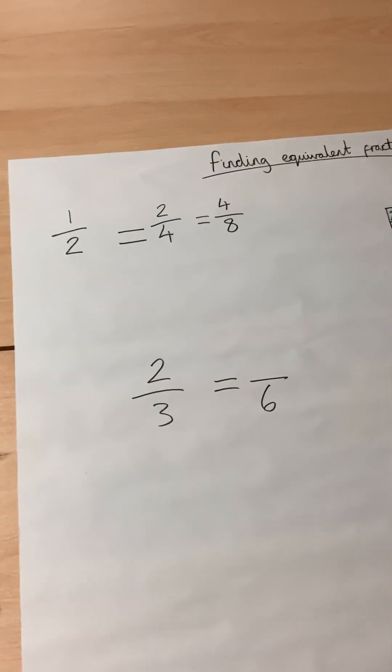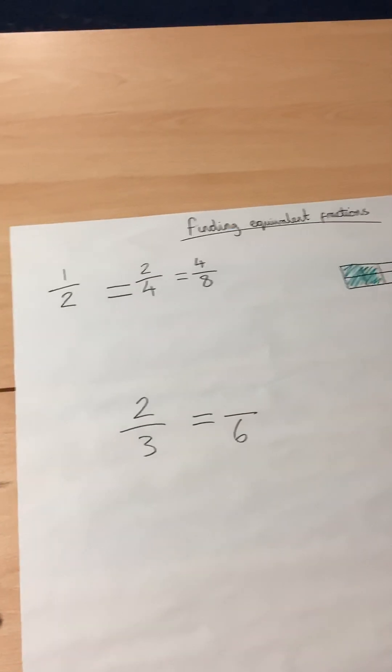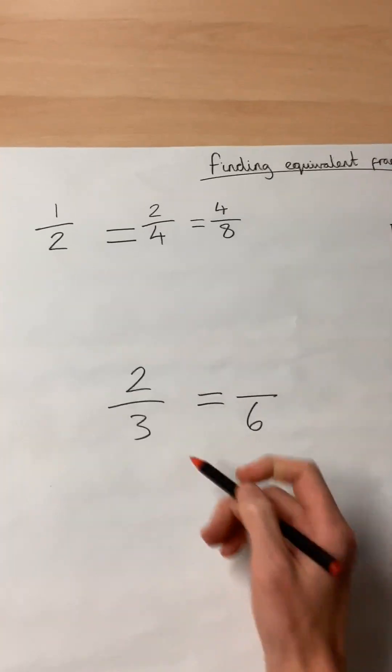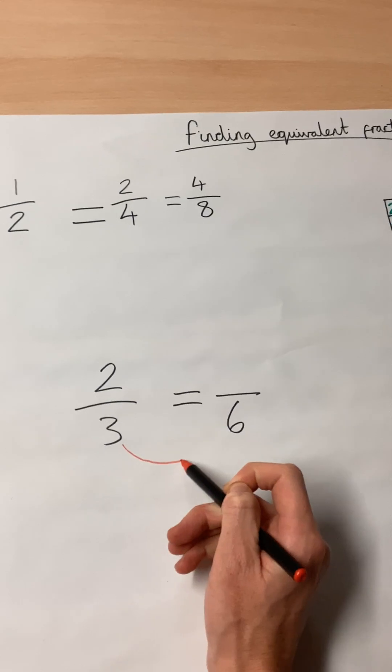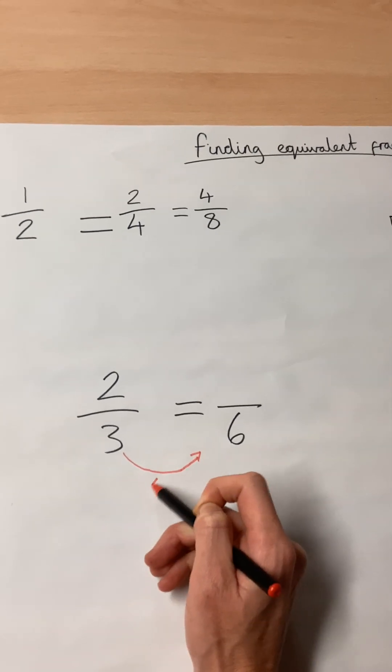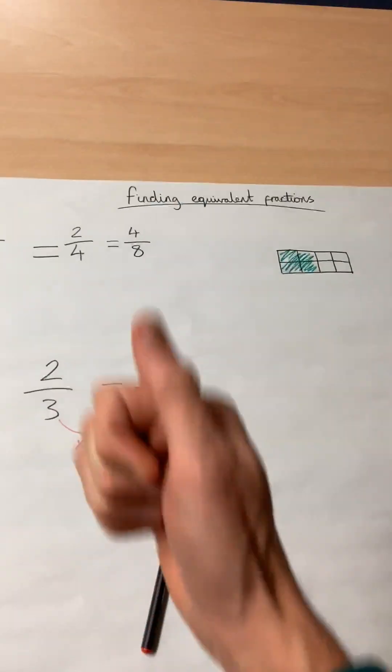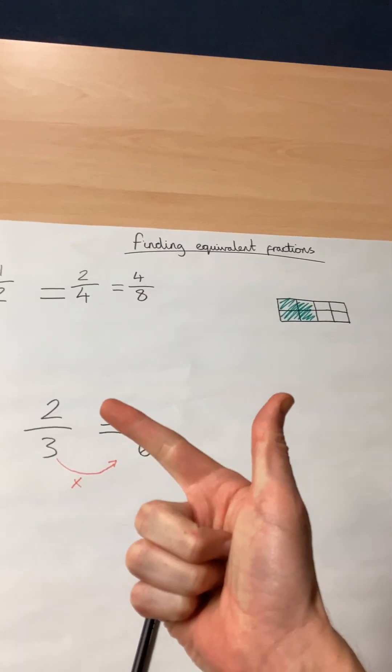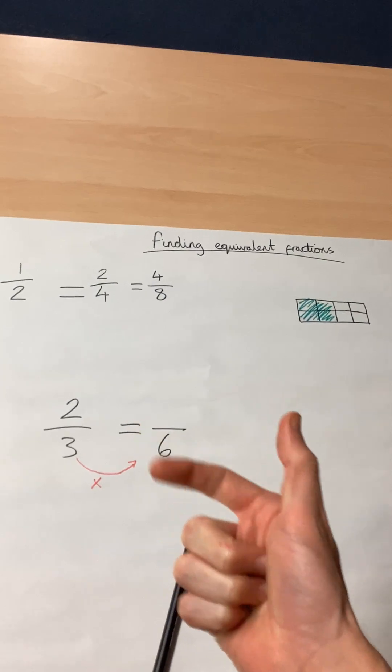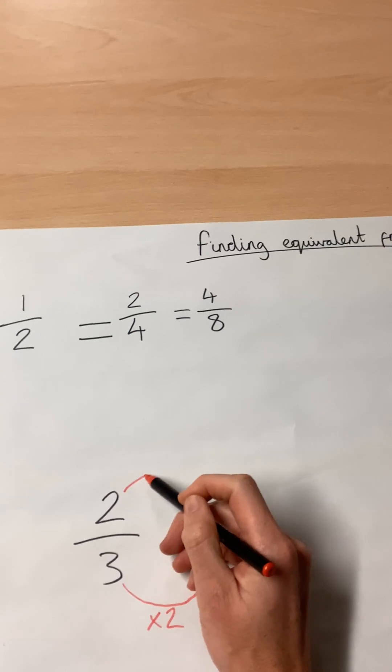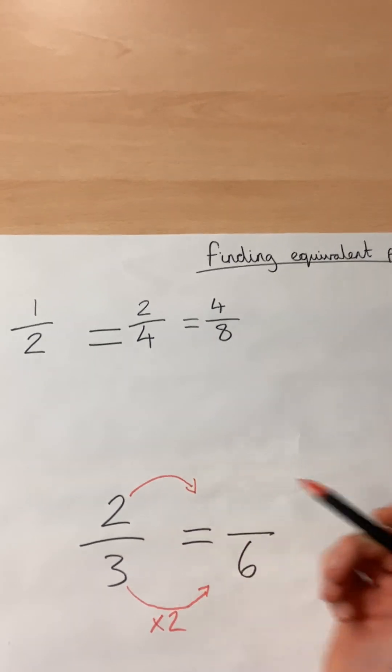If I want that to become over sixths, there's a simple times table-related solution. What has three been multiplied by to become sixths? We do our three times table. Three, six. It's been multiplied by two. So, then I times the top number by two as well.